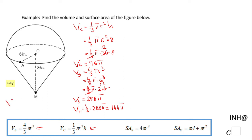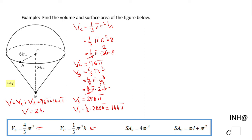The volume of this composite shape will be the volume of the cone plus the volume of the hemisphere — that means 96π plus 144π. So the final answer for the volume is 244π cubic inches. This is the volume of this composite shape.